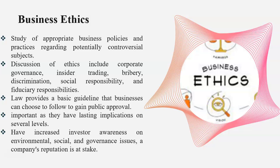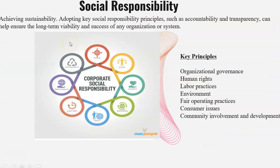So this is something of critical importance that our previous lectures have taken care of. Moving on, we have social responsibility. Achieving sustainability and adopting key social responsibility principles such as accountability and transparency can help ensure the long-term viability and success of any organization or system. Principles such as ethics, sincerity, resources, goals, long-term responsibilities, sustainability, and market ethics — all these things come under corporate social responsibility.